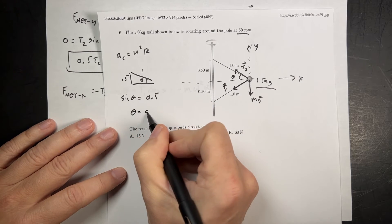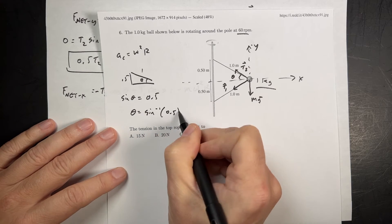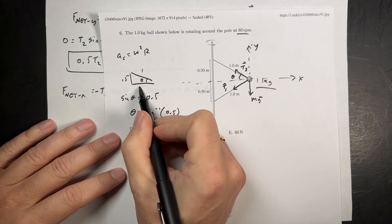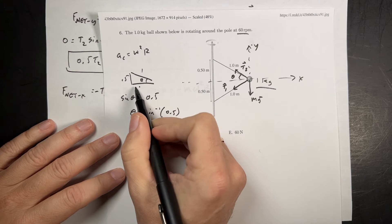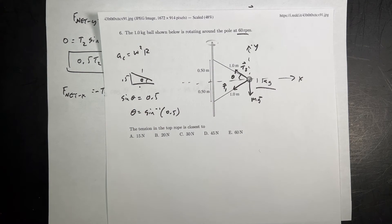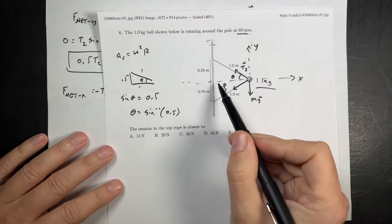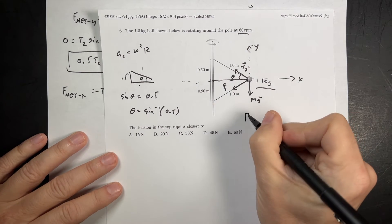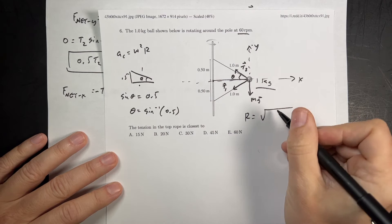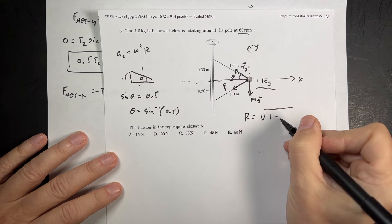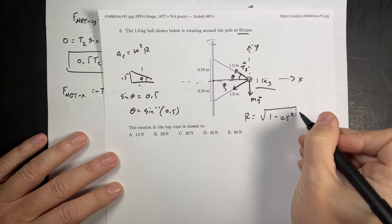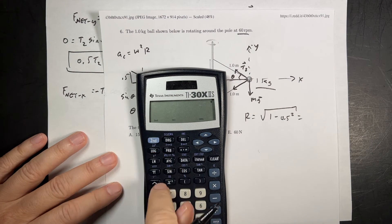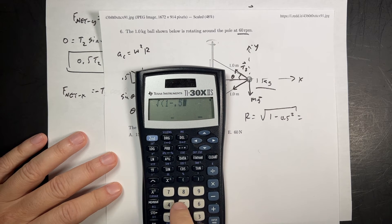So theta is sine inverse of 0.5. Let's just do that, that'll be easier. Then I'll take the cosine of it. You could also use the Pythagorean theorem and find the length of this, and then find the cosine that way, but it doesn't really matter. Now for r, it's this distance. Oh, so I guess I kind of do need to find that distance. So r is going to be equal to the square root of 1, 1 squared, minus 0.5 squared. And I should know that, I don't know why.